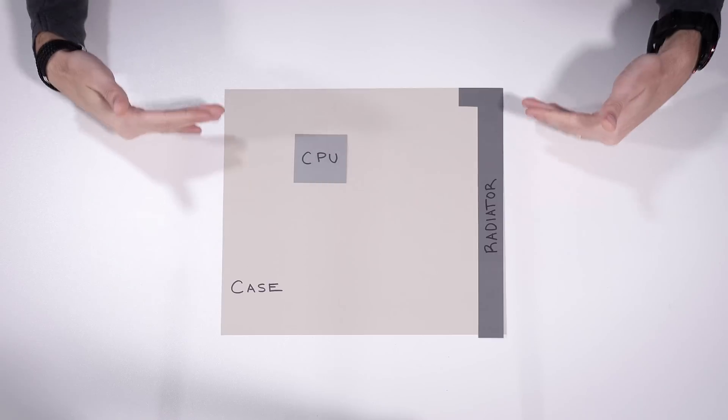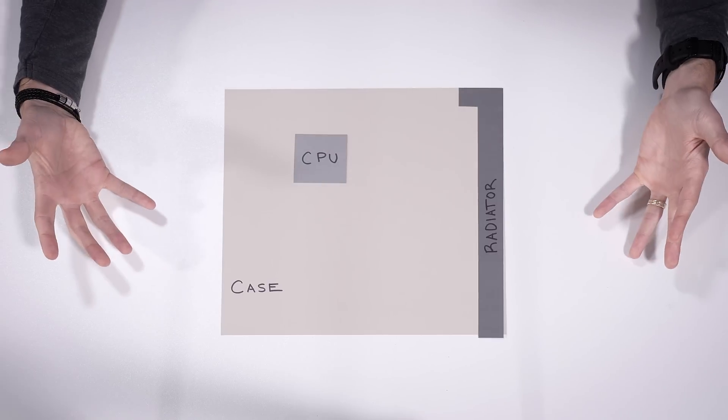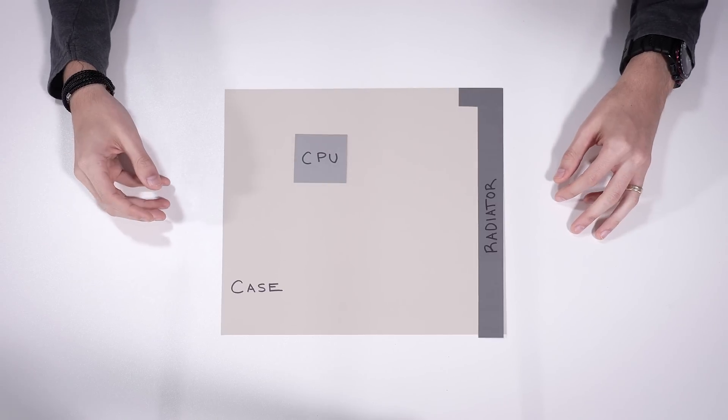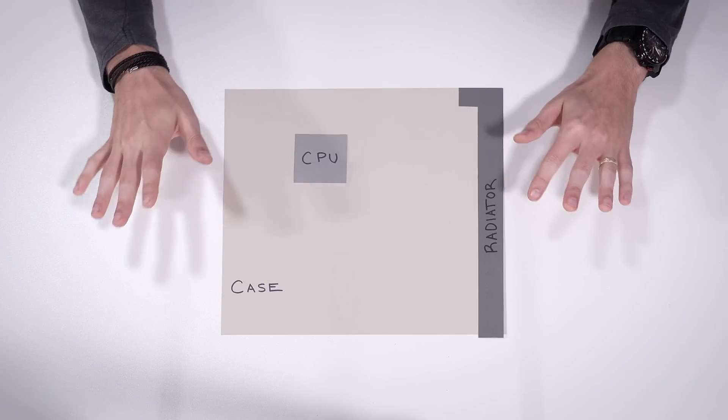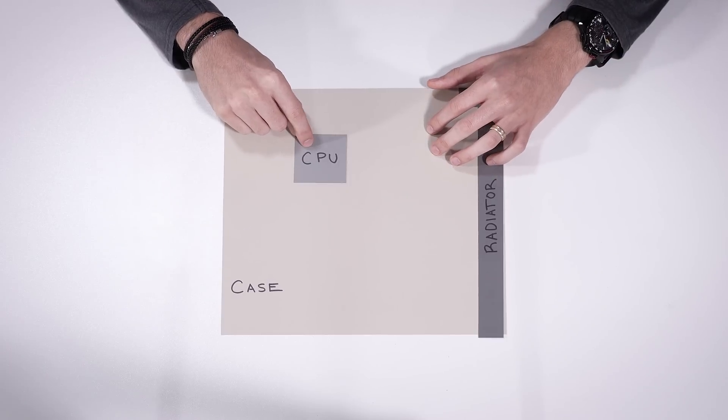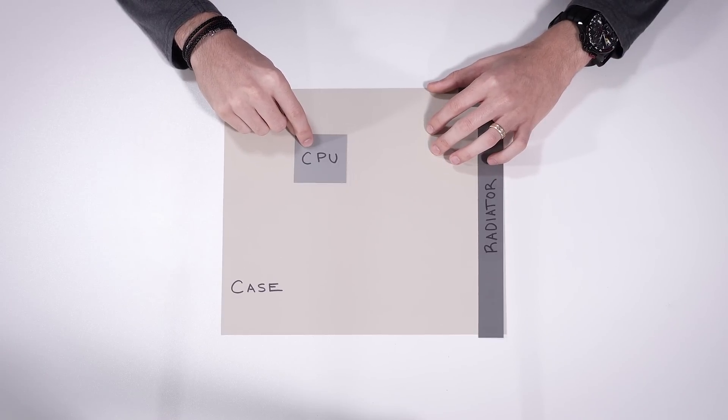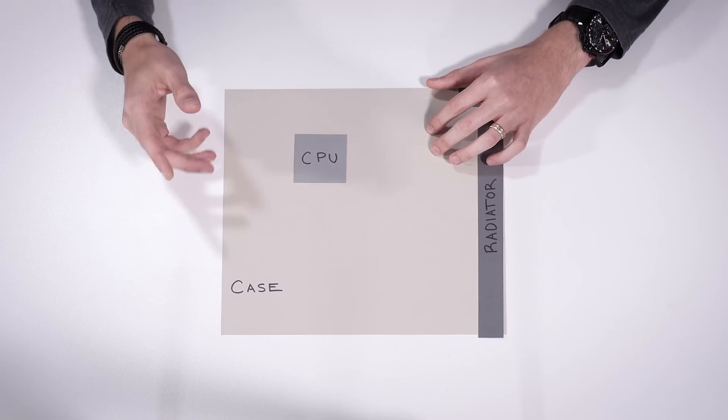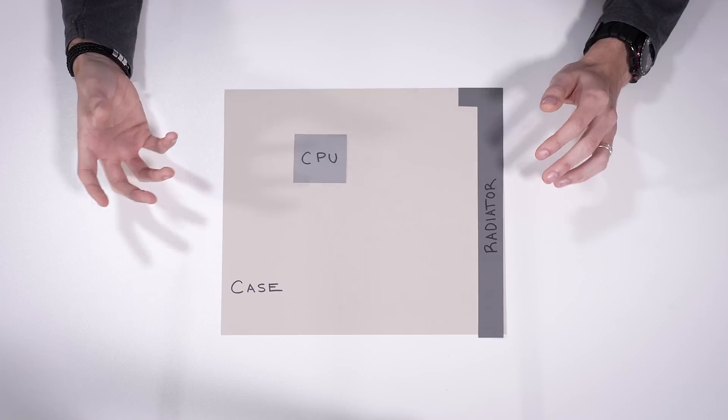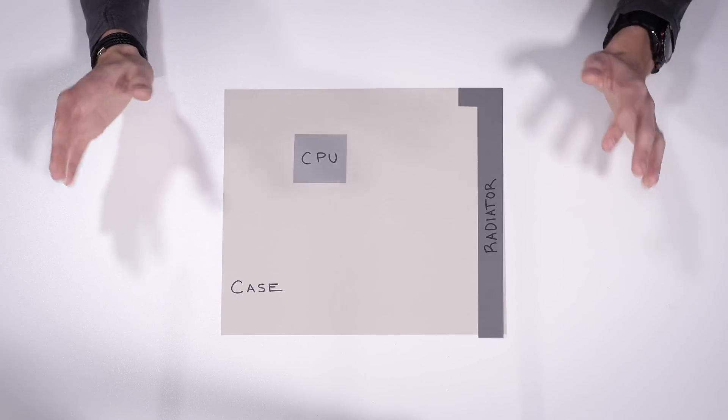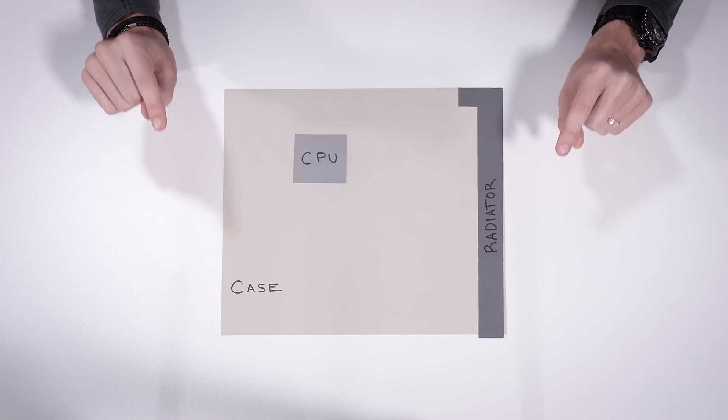But anyway, I hope that this little representation here helps better explain the issue at hand. Hopefully it clears it up if you have any concerns. And this all, again, assumes that the pump is in the block, which most Asetek pumps will be positioned in the blocks here. And Asetek is the pump provider for many, many AIOs out there. But there are exceptions, and that's what I want to get to next.